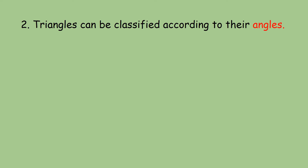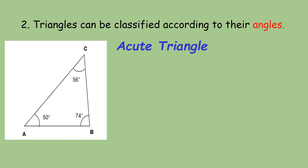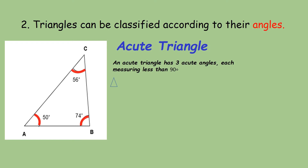Another classification of a triangle according to their angles is the acute triangle. This picture is an example of an acute triangle because it has three acute angles, each measuring less than 90 degrees. Therefore, triangle A, B, C is an acute triangle.